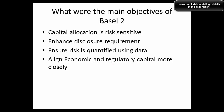What are the main objectives of Basel 2? Capital allocation is risk-sensitive, recognized in much more detail than in Basel 1. It also emphasized enhancing disclosure requirements, which were missing in Basel 1. It tried to ensure that risk is quantified using data — also missing in Basel 1. And it ensured that everything aligned more closely with economic and regulatory capital.